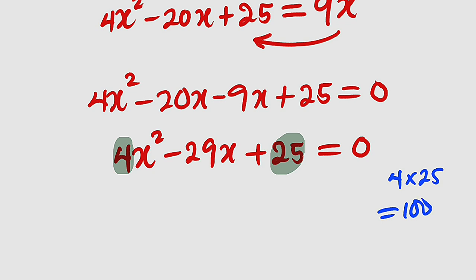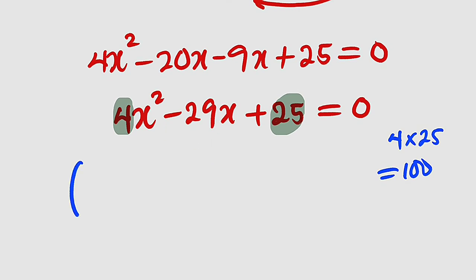Then think of two numbers you can multiply to get 100. But when you add them together, you get the middle term, which is negative 29. And the numbers are negative 25 and negative 4. So we have negative 25 and negative 4.